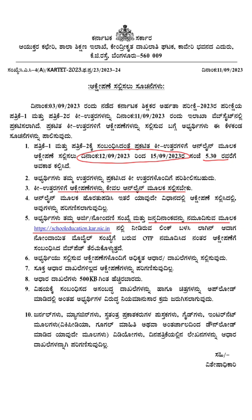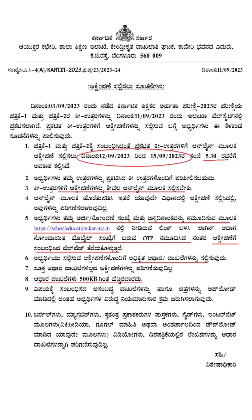An OTP will be sent to your registered mobile number. Then you can open the page to raise your objection on the website. Candidates who would like to raise an objection should provide authentic evidence. All documents should be within 500 KB in size. Go through these 10 instructions and then apply through online mode for the objections.